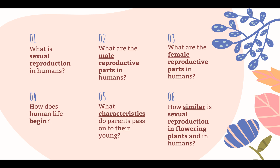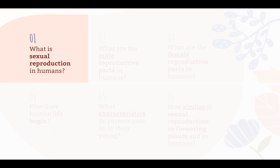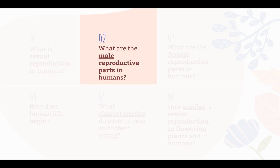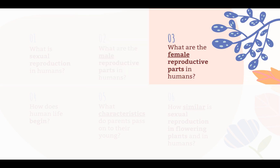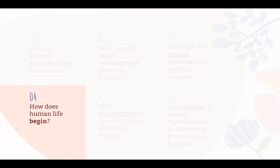Let us recap the six guiding questions. One: sexual reproduction in humans is a process which involves a male and a female during mating, so that the male and female reproductive cells can meet and fuse. Two: the male reproductive parts are the testis and the penis. Three: the female reproductive parts are the ovaries, the fallopian tubes, the womb, and the vagina. Four: when a male and a female mate, one sperm meets an egg and they fuse in a process called fertilization. The fertilized egg starts to divide to form more cells. It attaches itself to the wall of the female's womb and continues to develop and grow until organs begin to form. The baby develops inside the female body and is born about nine months after fertilization.